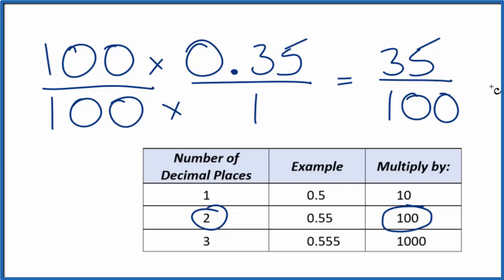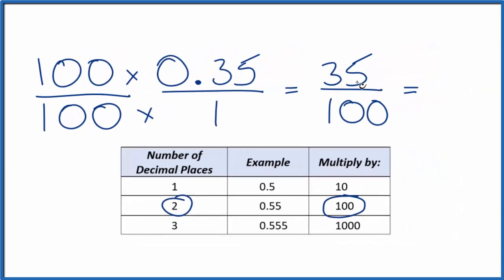We can reduce this fraction down further and simplify it. 5 goes into 35 seven times. 5 goes into 100 twenty times. So we could also write the fraction as 7/20. 0.35, that's the same thing as 7 divided by 20.